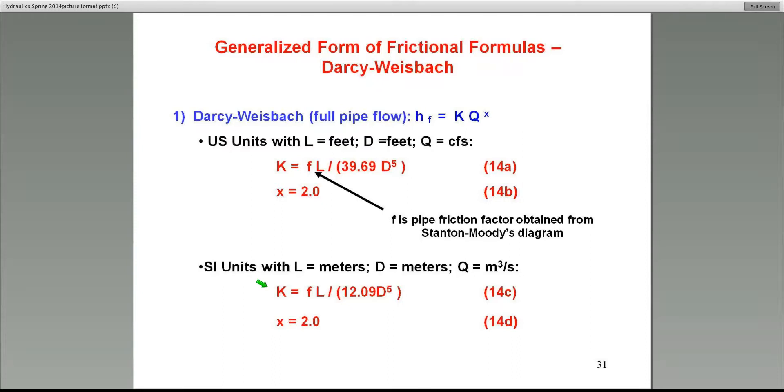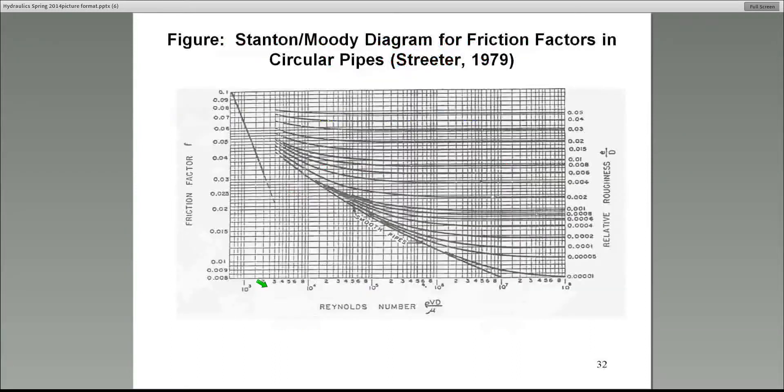Here's the K for SI units. On the next slide is the Hazen-Williams, and I'll use that and I'll show you that in a minute. But here's the Moody and Stanton-Moody's diagram that we talked about. There's a friction factor f, Reynolds number, and of course, the relative roughness. If you're using the Darcy-Weisbach method, you've got to get familiar with this diagram.